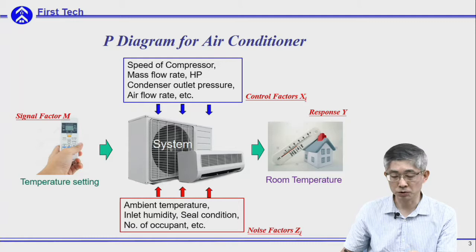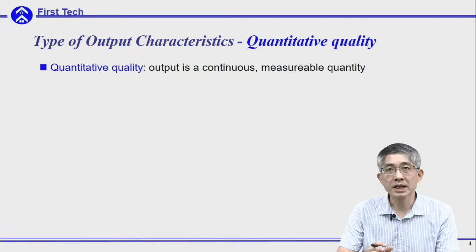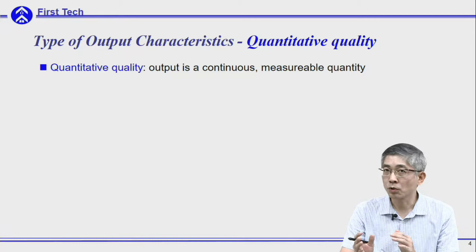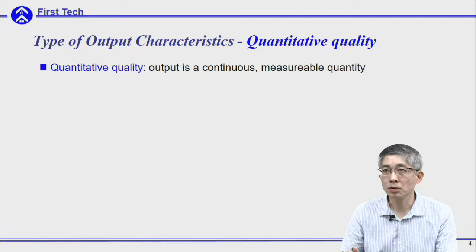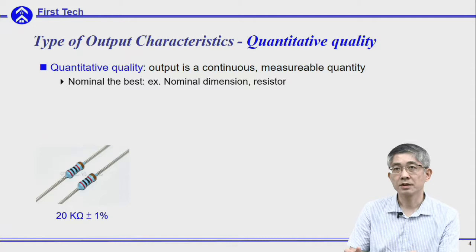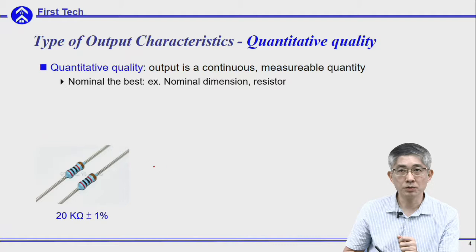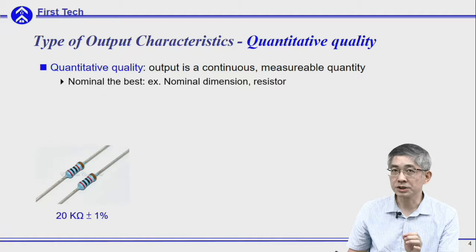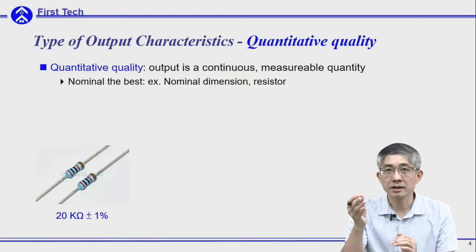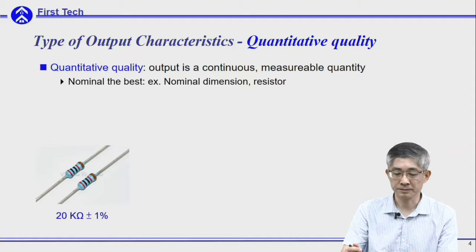So once you understand the parameters of these systems, you need to understand what kind of output we are talking about. Here we classify the output characteristics into quantitative and qualitative. Quantitative quality is a continuous and measurable quantity. There are several different types. The first one is nominal the best, which means your output has a specific target, such as a nominal dimension — or like this example, you are designing a resistor with a nominal resistance of 20 kilo-ohms, so you would like the output to be exactly 20 kilo-ohms, nothing bigger, nothing smaller.